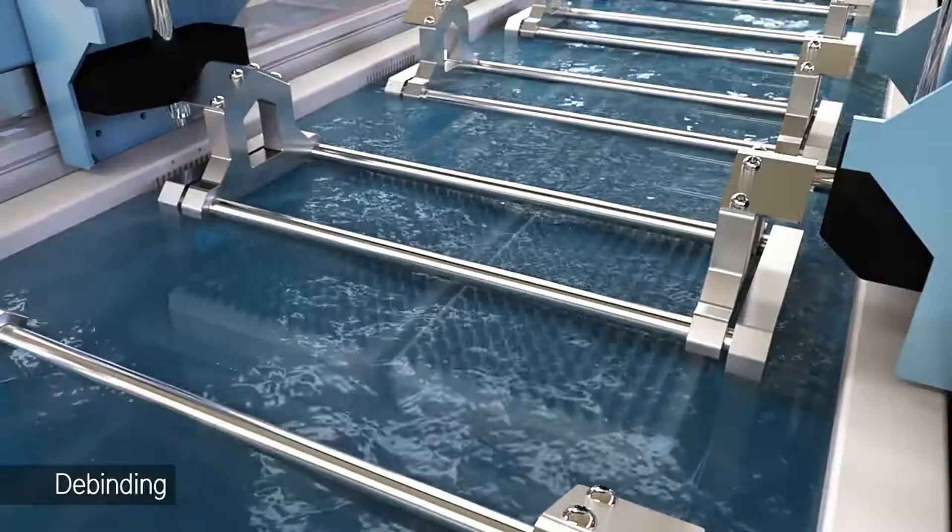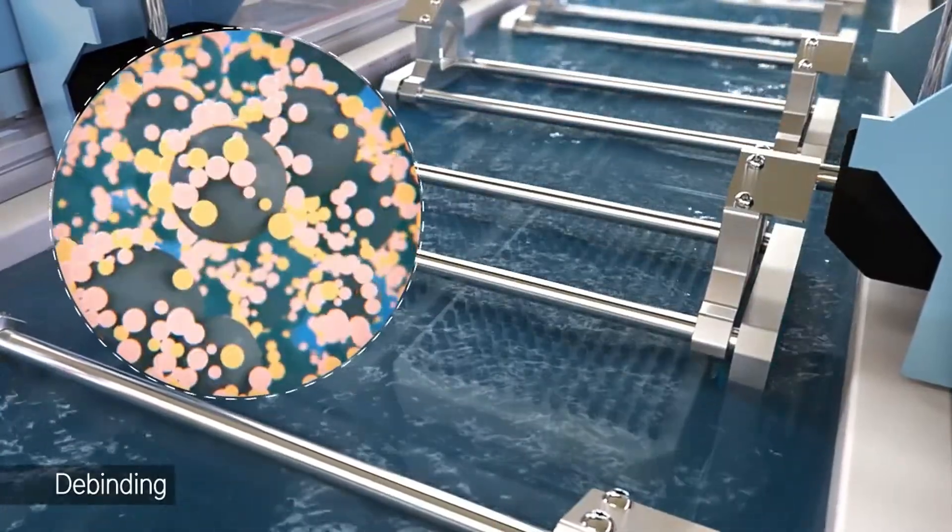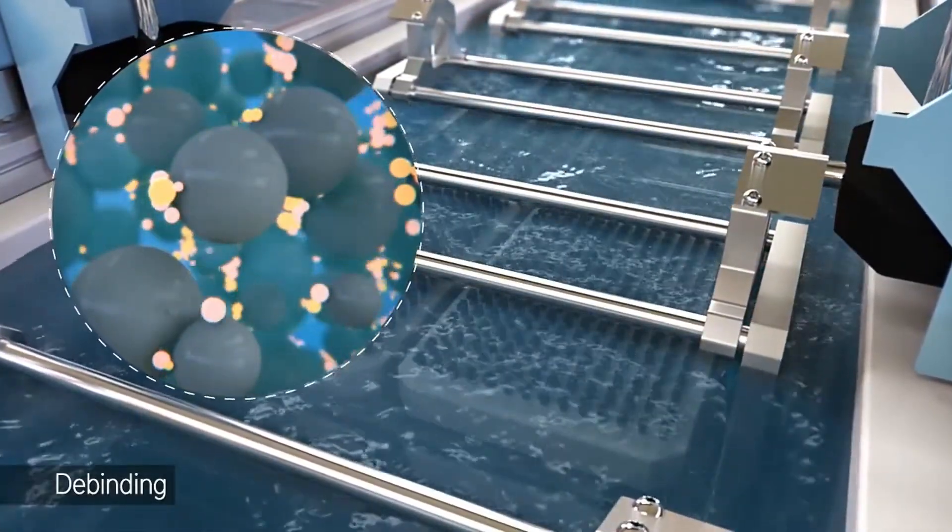The third step is degreasing. The adhesive was removed from the green part to get a brown part with tiny gaps.